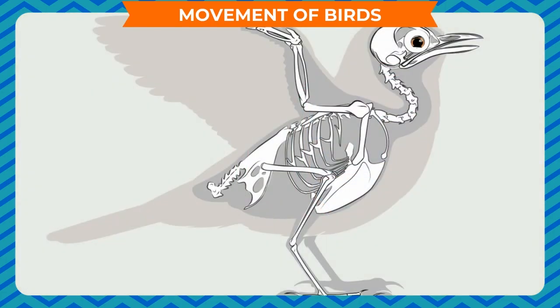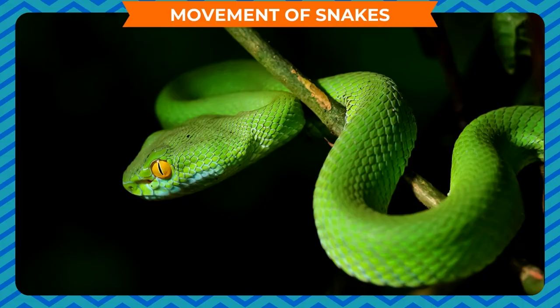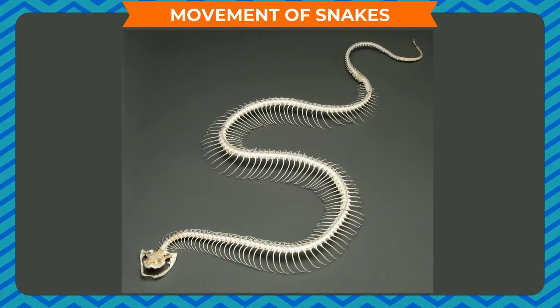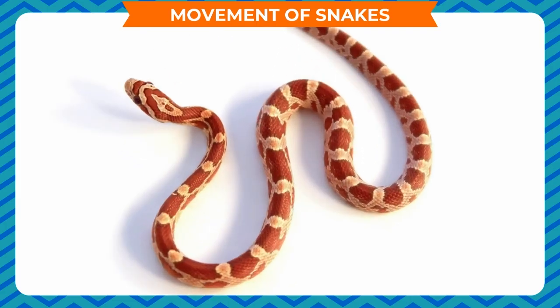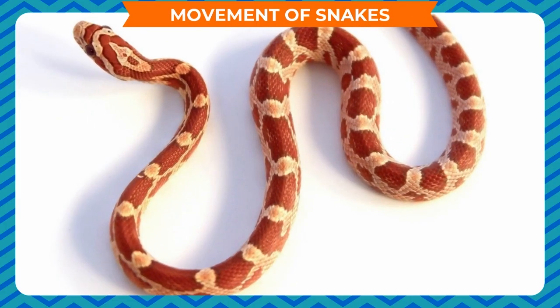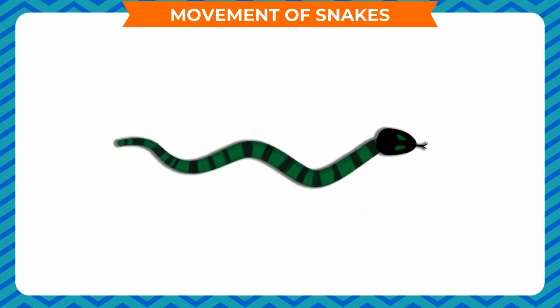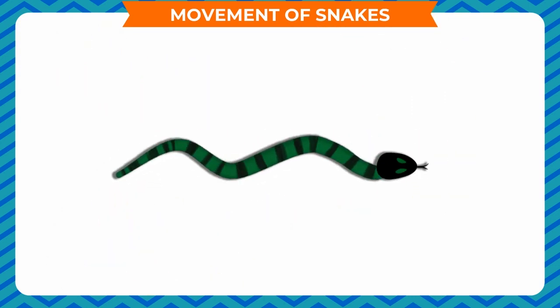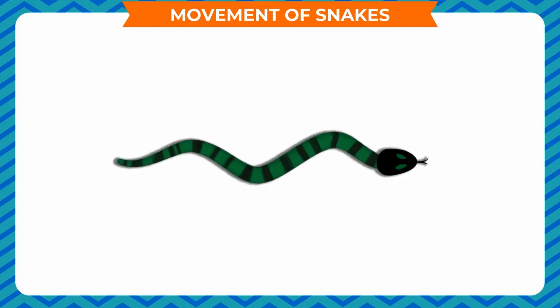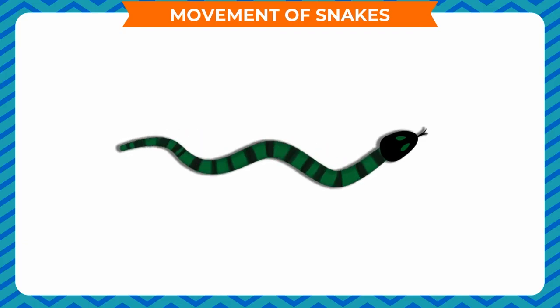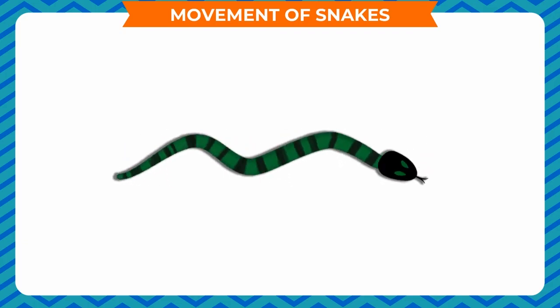Movement of snakes: Snakes have a long backbone and long thin muscles connected to each other even though they are far apart. Muscles also interconnect the backbone, ribs, and skin. The snake's body can curve into many loops, and each loop gives it a forward push. The snake moves forward very fast in a zigzag manner.